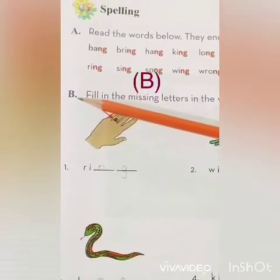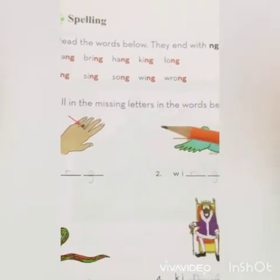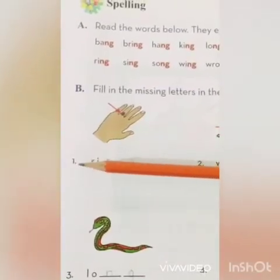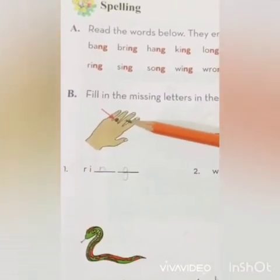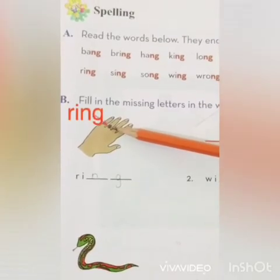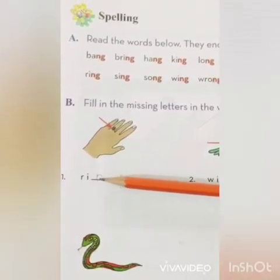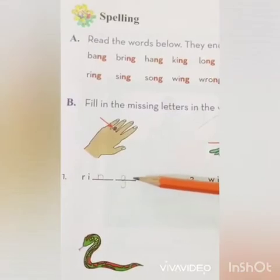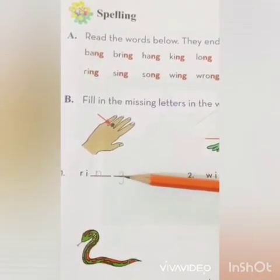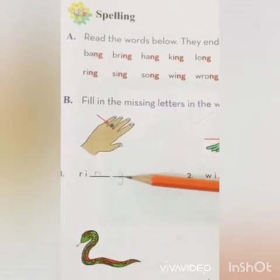Part B — I'm going to read the statement of Part B: fill in the missing letters in the words below. Number one, you can see here a picture of a ring. The spelling of ring is r-i-n-g, so we have to write in the given blank: ng — r-i-n-g, ring.